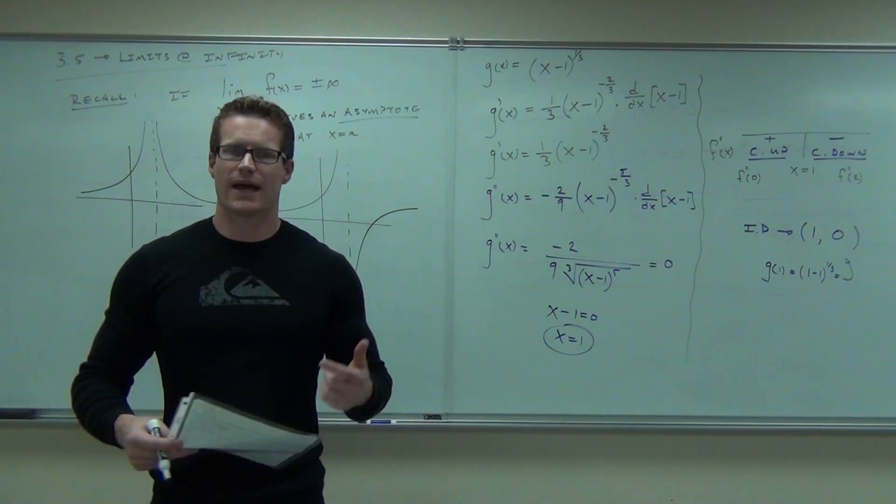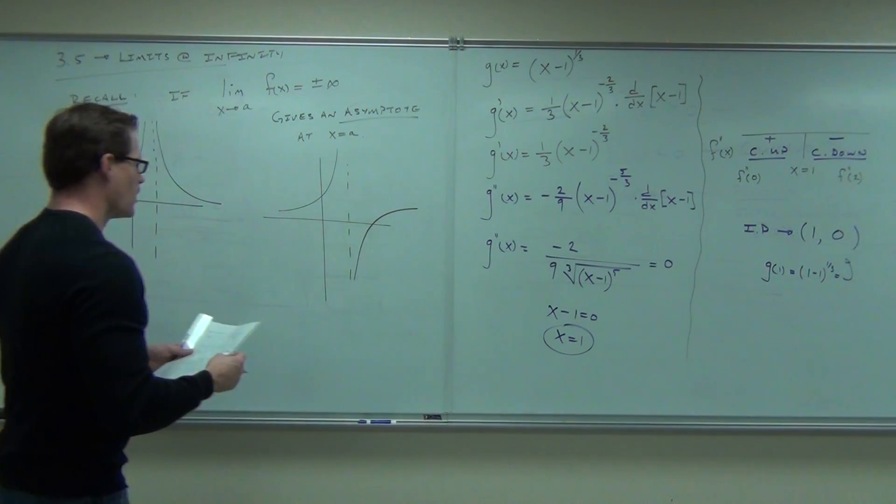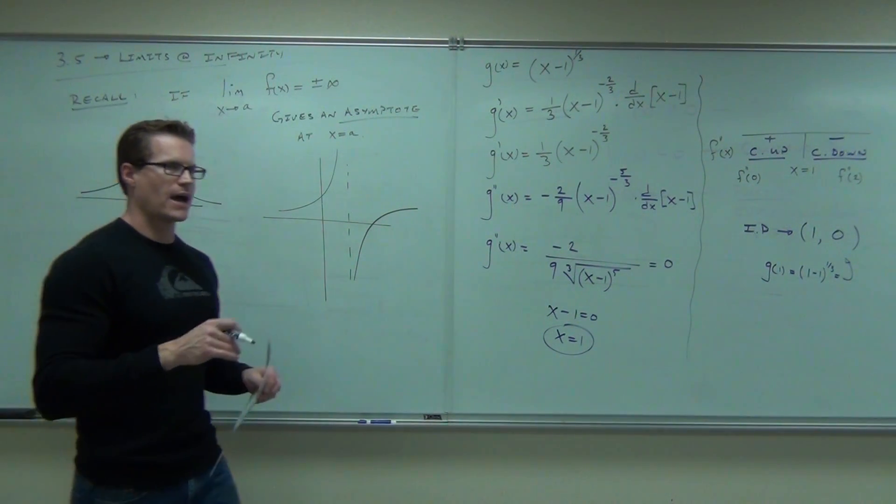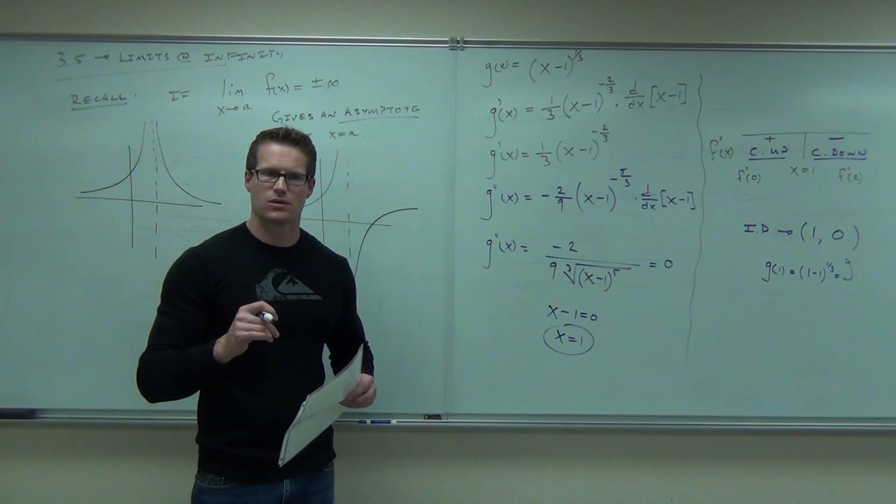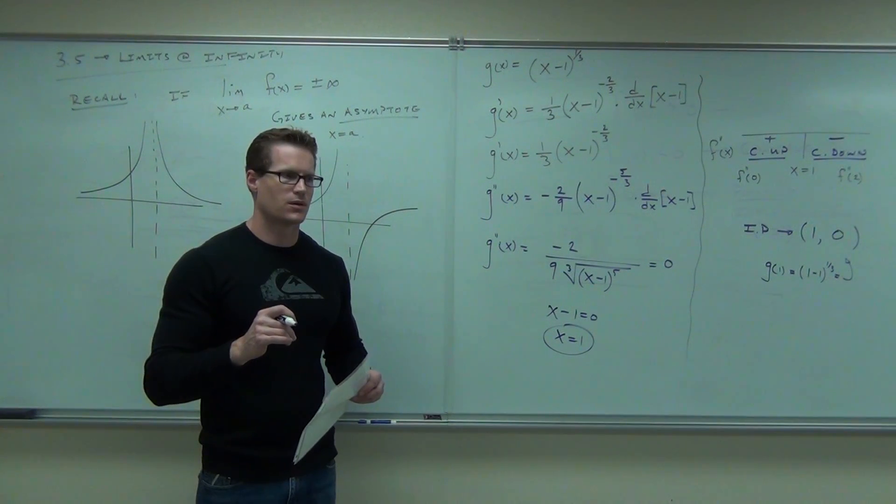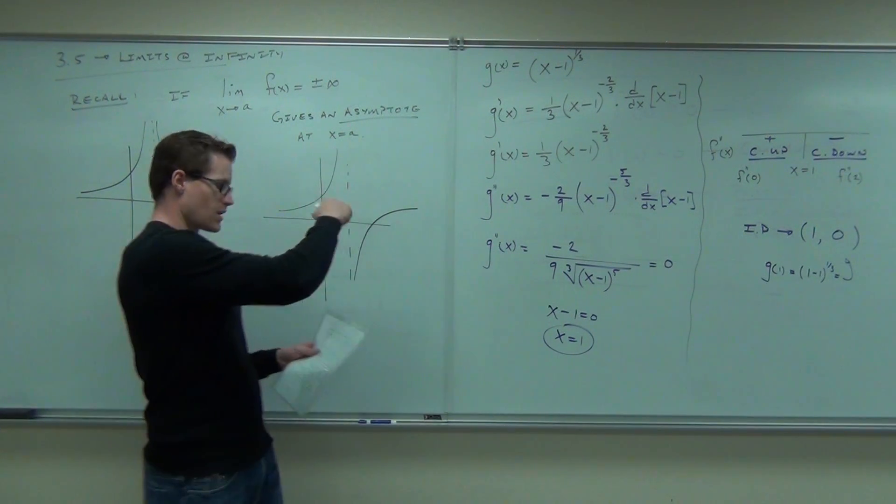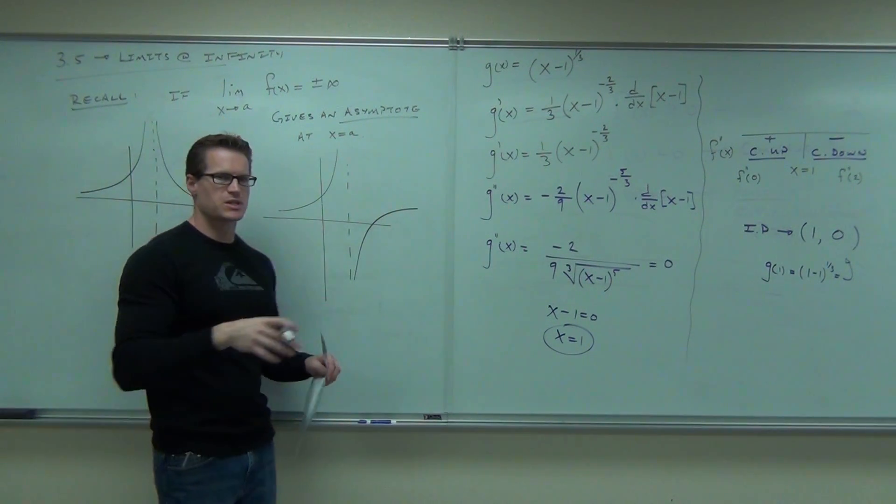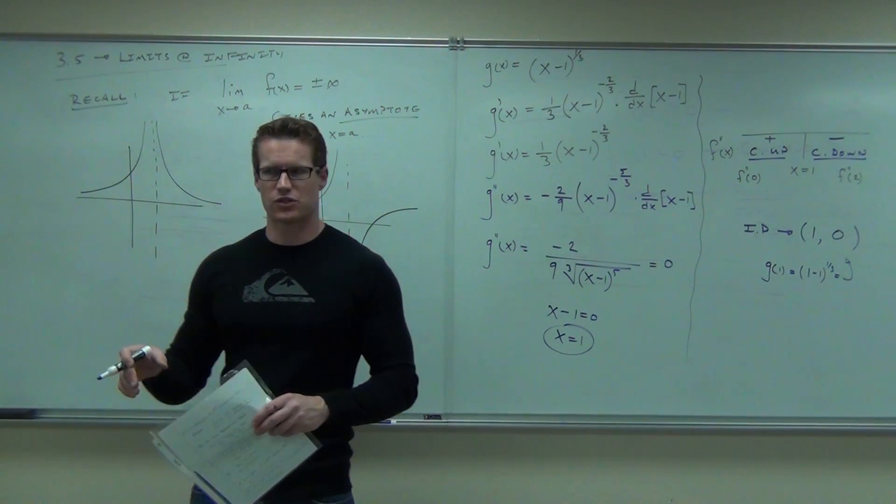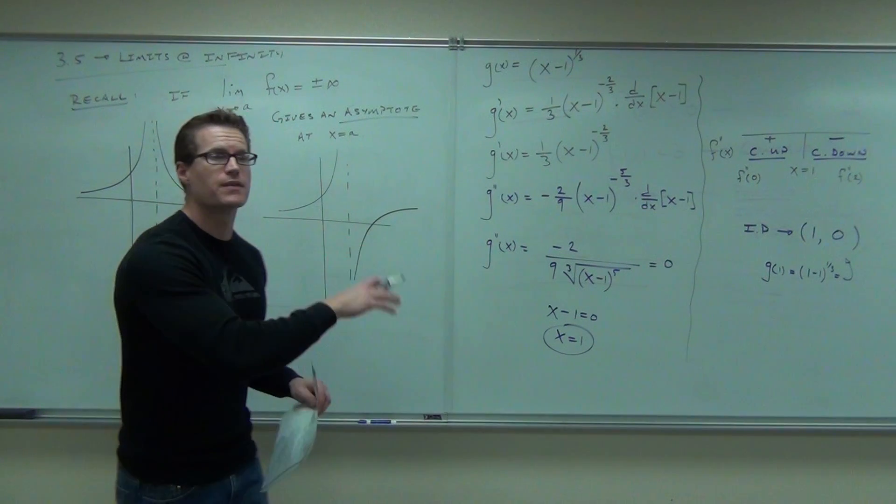And we had a way to actually determine this, if you remember. How did we determine where we had holes or asymptotes? How do we find out where all this stuff happens? Let's pretend we had a rational function. Rational functions have denominators. How do you find these things?